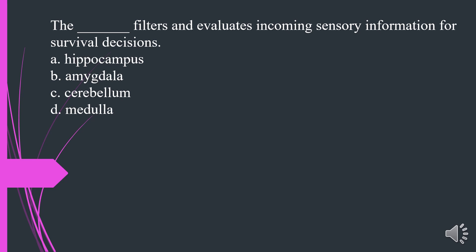What filters and evaluates incoming sensory information for survival decisions? A. Hippocampus. B. Amygdala. C. Cerebellum. D. Medulla. The answer is B. Amygdala.